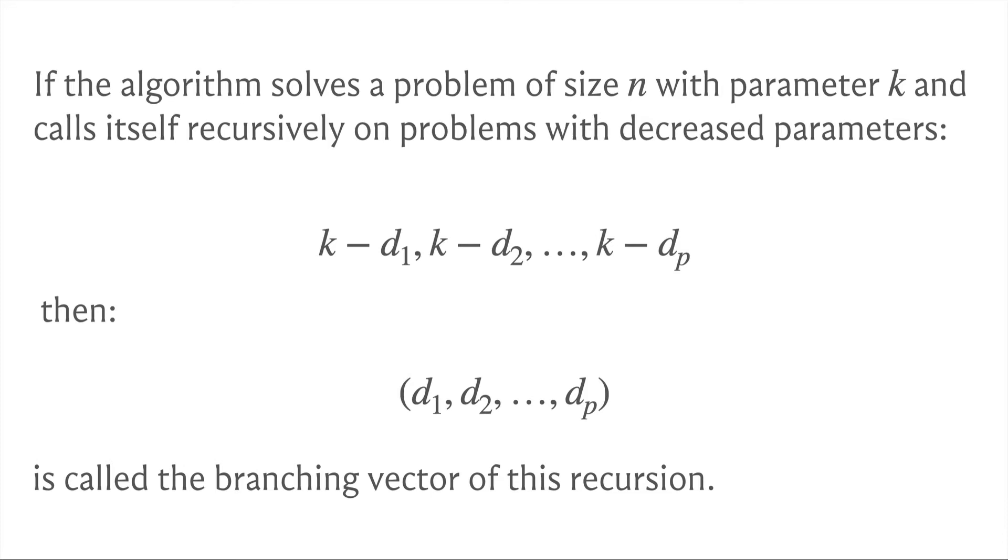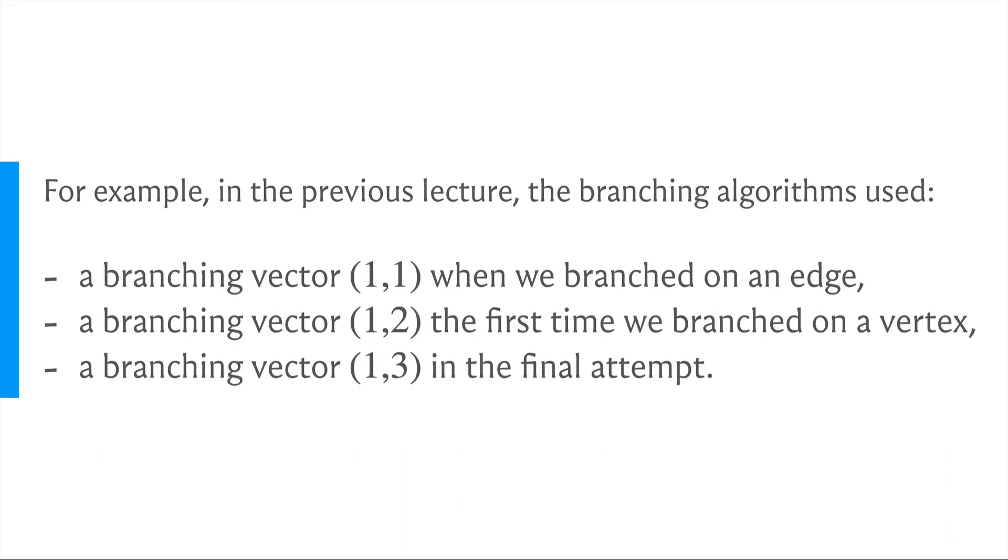So just as an example, here are the branching vectors from the algorithms that we saw in the previous lecture. Hopefully, this looks familiar. So we discussed three branching algorithms for vertex cover. Well, there were essentially two, but when we branched on a vertex, we had two different approaches, one of which gave us a stronger bound on the number of leaves in the search tree. So these branching vectors are in correspondence with the recurrences that you have already seen. And if this looks mysterious or strange in some way, then please do pause here and go back to the algorithms that we have already discussed in the previous lecture, and try to make sure that the connection and the definition of a branching vector is clear before we move on.